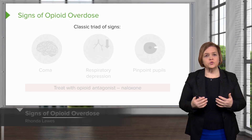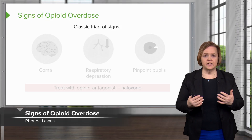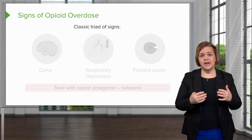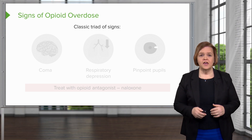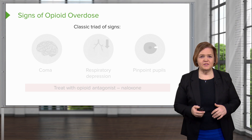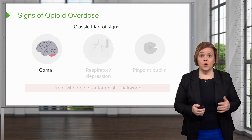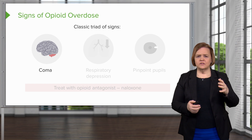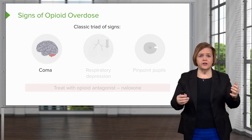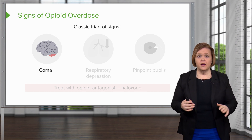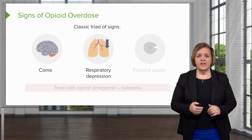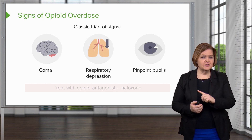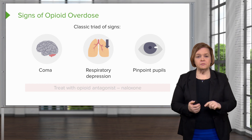As a nurse, you need to recognize what the classic triad of signs looks like if someone has had an opioid overdose. The first one is going to seem obvious: coma, meaning the patient is unresponsive. The second is respiratory depression. And here's the one to remember most: pinpoint pupils.